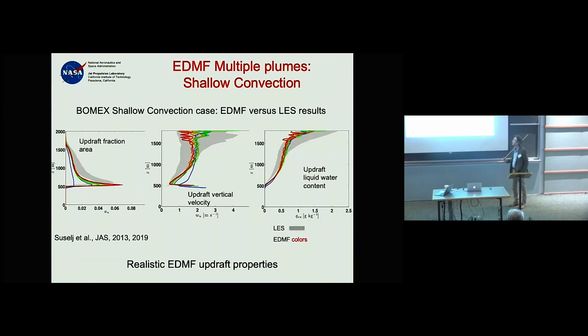What you can see is that the multiple plumes seem to fit the distributions of updraft properties really well. If you look at the mean values of the thermodynamic variables, you won't see a difference because the updraft properties are already very well represented.